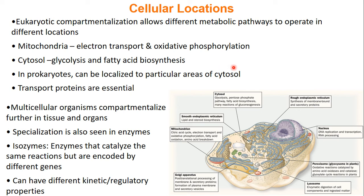In prokaryotes, you don't have subcellular locations. Rather, you can localize different processes to different parts of the cytosol — so they still do have localization, it's just still in the cytosol. And since we are moving between different organelles, transfer proteins are very essential for making metabolism work.